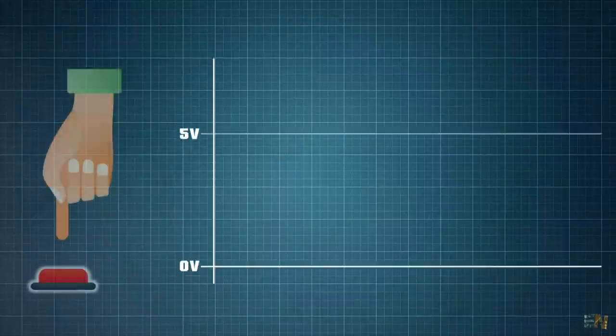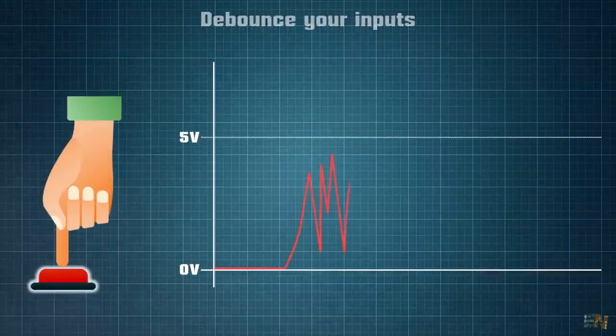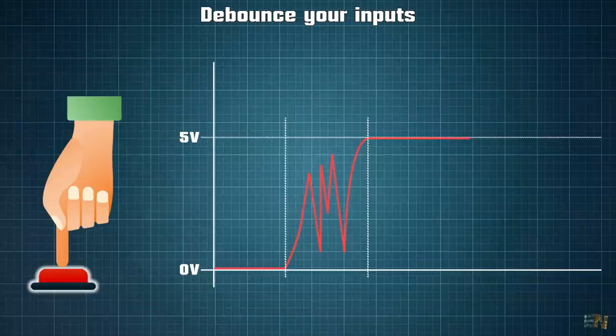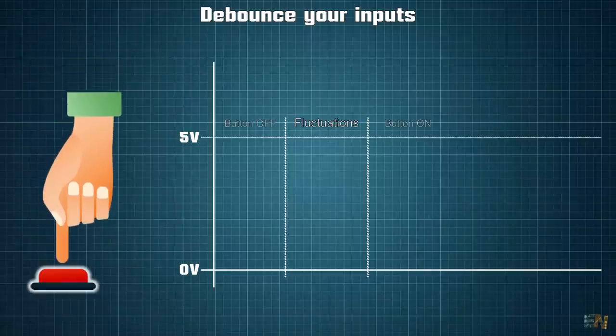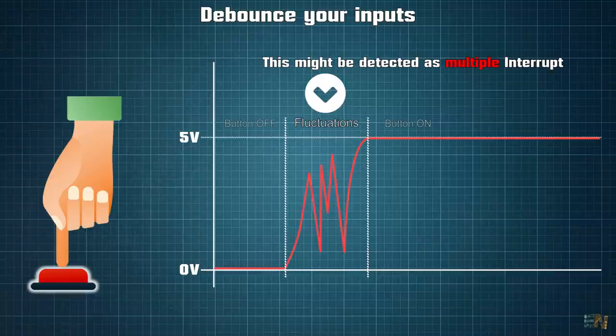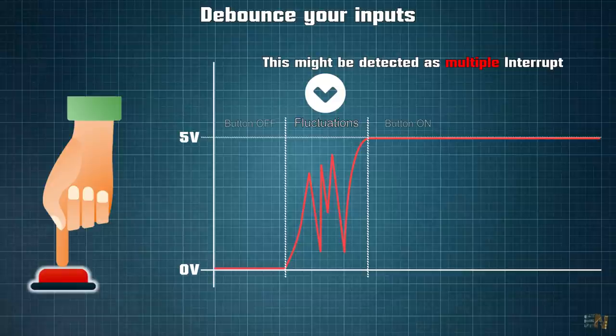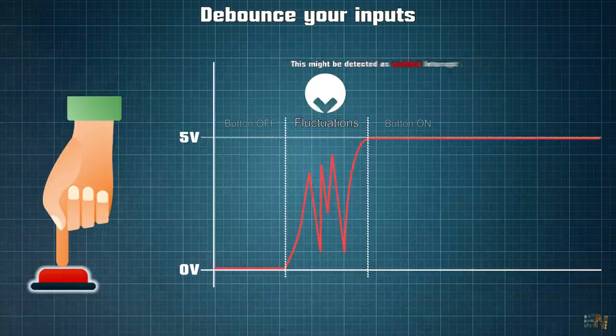Another thing to have in mind is that if you use interruptions with buttons, sensors and so on, you should consider applying debounce. As you already know, on a state change, the pin could oscillate for a brief moment before going stable. Because interruptions are very fast, instead of just one push of a button, it could trigger an interruption on each oscillation. So consider applying debounce.